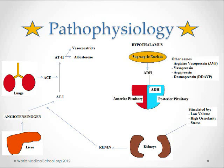Angiotensin 2 also stimulates the thirst center in the brain, and lastly it secretes ADH from the posterior pituitary, which goes to the V2 aquaporin receptors at the collecting duct in the kidney to reabsorb water and concentrate the urine. The whole purpose of the renin-angiotensin-aldosterone pathway is to hold on to the water.